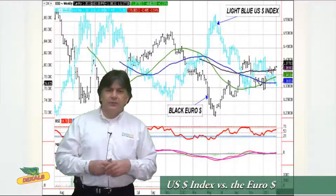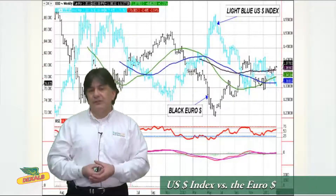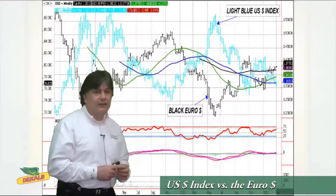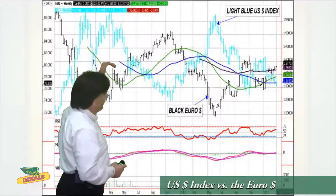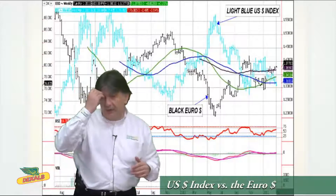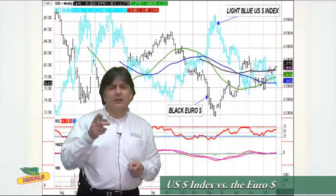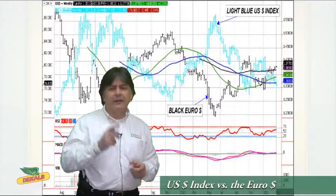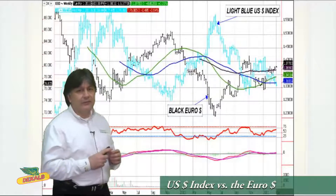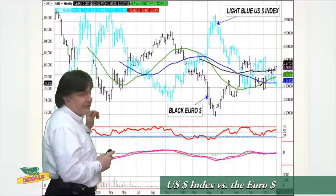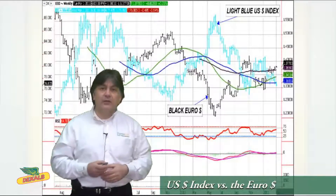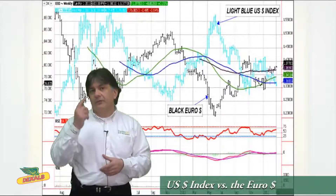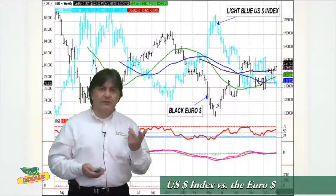This is the US dollar versus the Euro dollar. Because of the big weighting at 57.6%, you can see the inverse relationship. The Euro dollar is in black and the light blue is the US dollar index — when you see the US dollar index moving higher, you see the Euro dollar moving lower. In fact, in 2011, the Euro dollar was up 3.4% and the US dollar was down 3.4%.